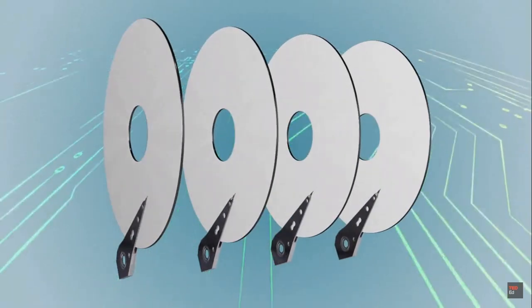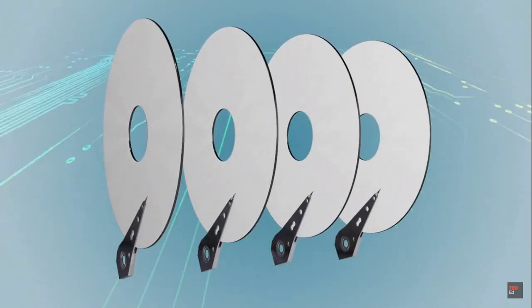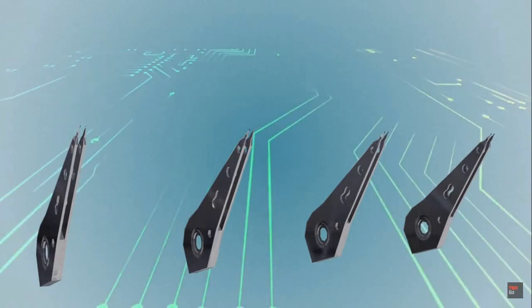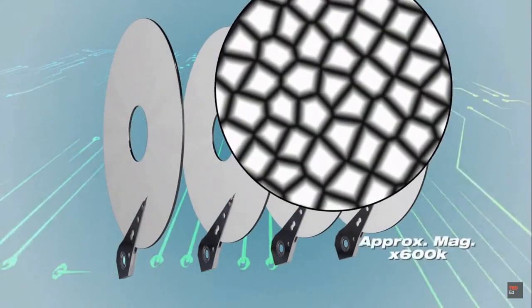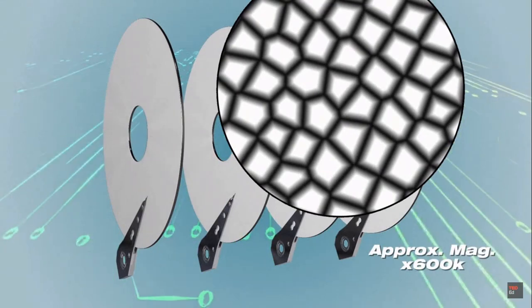So how does it store so much information in such a small space? At the heart of every hard drive is a stack of high-speed spinning disks, with a recording head flying over each surface. Each disk is coated with a film of microscopic magnetized metal grains.